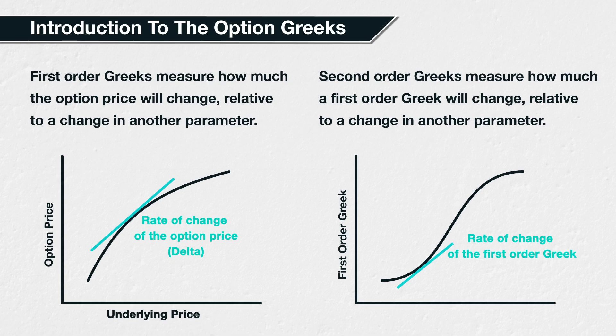Second-order Greeks are partial derivatives of first-order Greeks. For example, gamma is a partial derivative of delta with respect to the underlying price, meaning it measures the sensitivity of the option's delta to changes in the underlying price. There are also higher-order Greeks; however, we will not be covering those in this course.